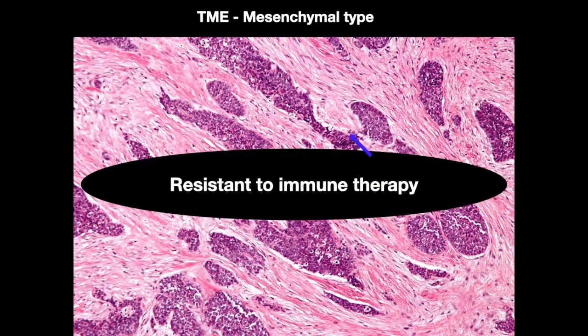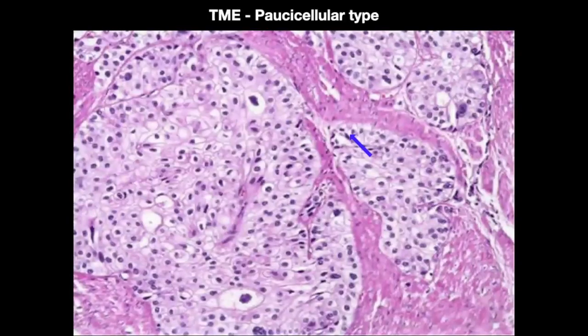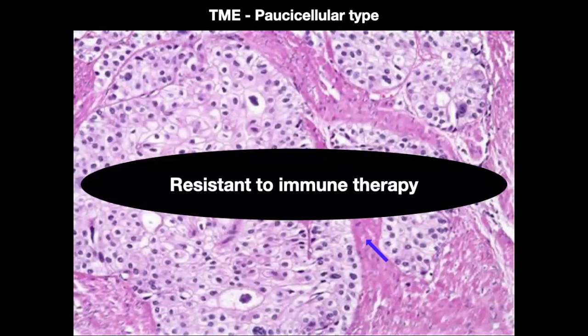The mesenchymal type of TME is resistant to immunotherapy. The third type is the pasicellular type — neither mesenchymal-rich nor immune cell-rich. Here the tumor cells are predominantly made up of nests of epithelial cells with clear cytoplasm and a distinct cell border, but the tumor microenvironment is pasicellular. This type is also very resistant to immunotherapy. So you can understand why we type the TME — the inflammatory or immunological type is the only type that responds to immunotherapy.